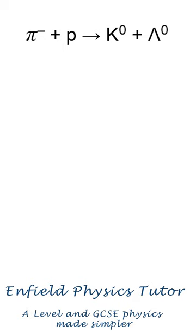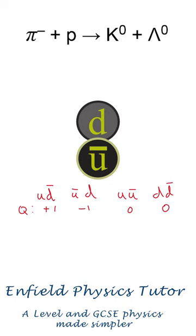All mesons are a quark-anti-quark pair, and pi's have no strangeness. Working through the combinations of u and d, this gives us d anti-u for the pi.